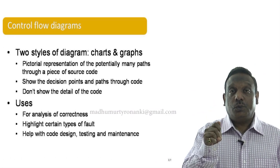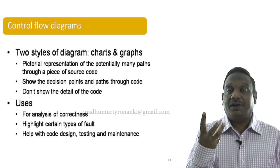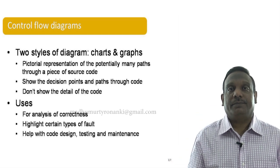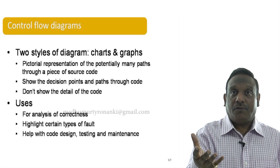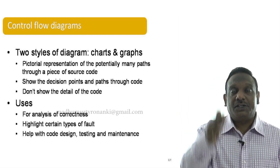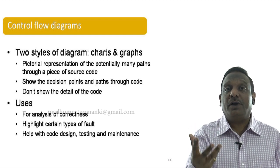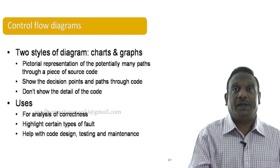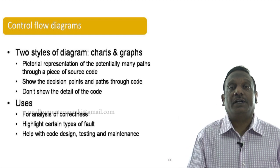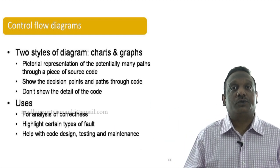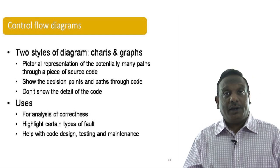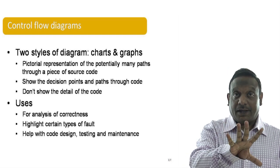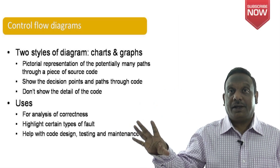Let us talk about two types of control flow diagrams that we can create given a source code. Source code consists of English-like statements to solve a problem and it will have a control flow. The execution flow of instructions is determined by control flow. A program will have a lot of data or variables — we declare, define, and use variables and apply logic using control flow statements. As an ISTQB certified engineer, you must be able to convert source code into a control flow diagram.